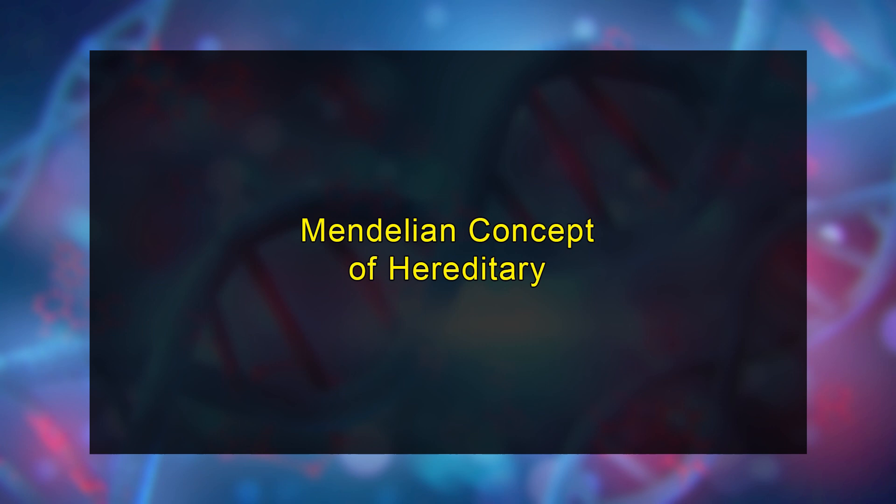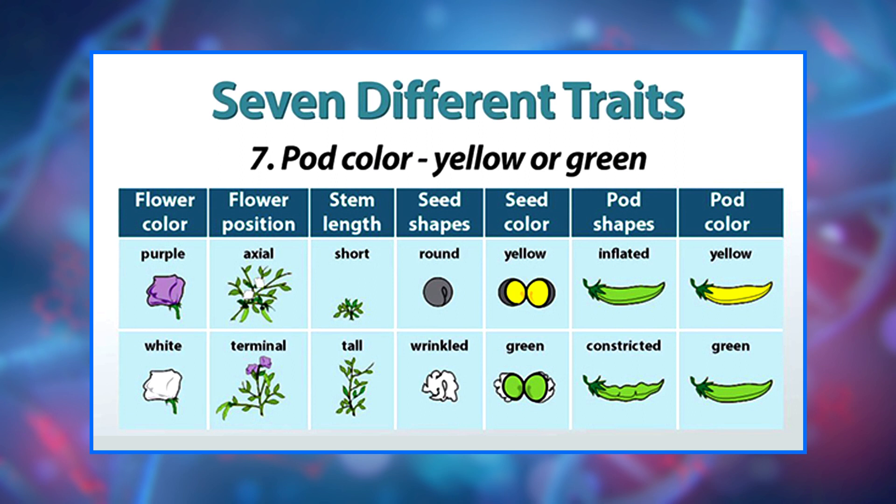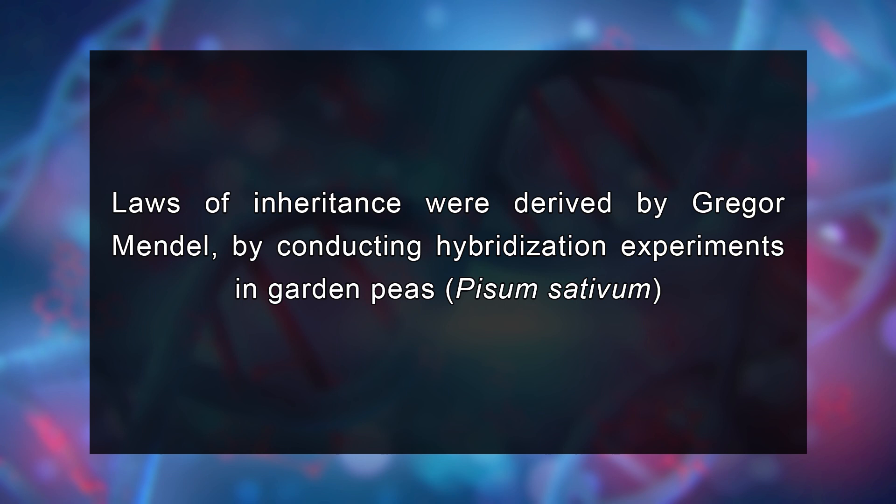Let's now discuss the Mendelian concept of heredity. Our modern understanding of how traits may be inherited through generations comes from the principles proposed by Mendel in 1865. However, Mendel did not discover these foundational principles by studying human beings, but rather by studying Pisum sativum, the common pea plant. After eight years of tedious experiments and, by his own admission, some courage to persist, Mendel proposed three foundational principles of inheritance. The laws of inheritance were derived by conducting hybridization experiments in garden peas.